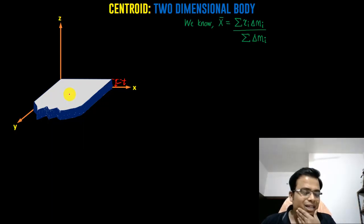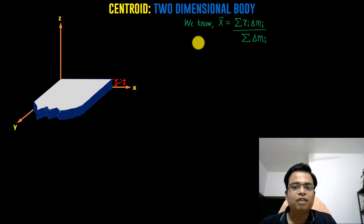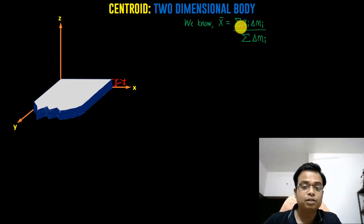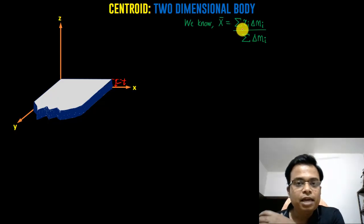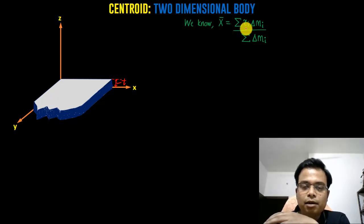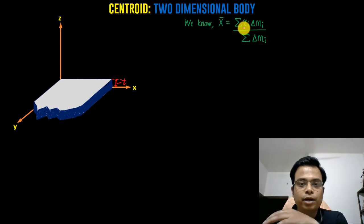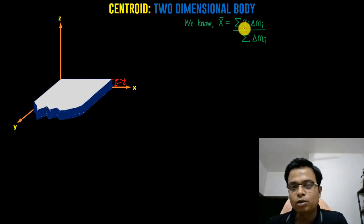Until now we've seen that center of gravity can be calculated with this formula. This was achieved by applying the moment method, where the resultant moment equals the sum of the moments of individual pieces or elements.